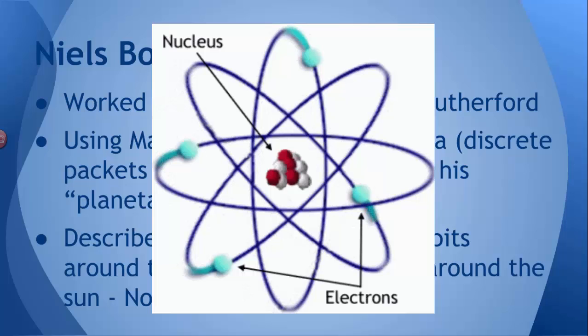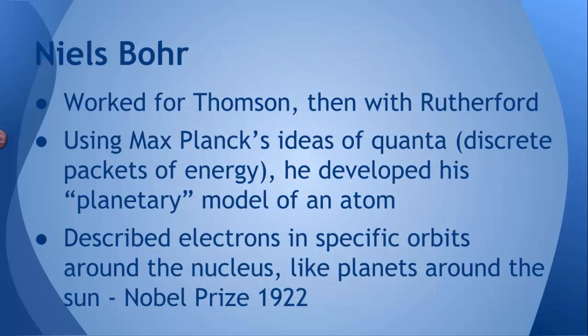We have this massive nucleus in the middle and we have these electrons orbiting around, like planets around the sun. For this work, and now this wasn't just an idea like he drew it on a piece of paper. He had some very, very strong math backing him up for hydrogen, working on the hydrogen atom. He won Nobel Prize in 1922 because of this work.